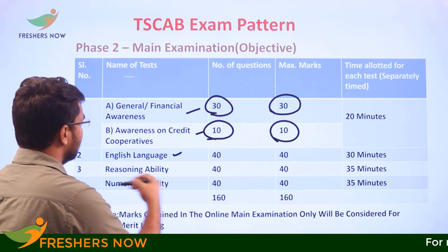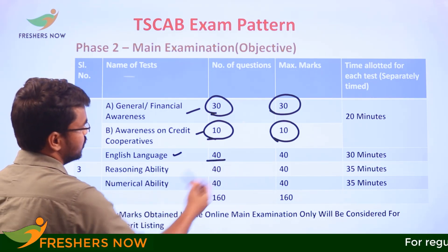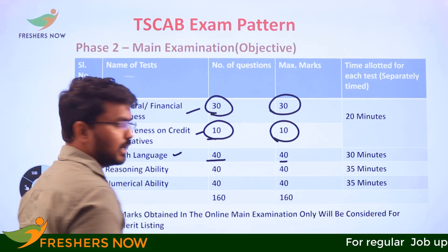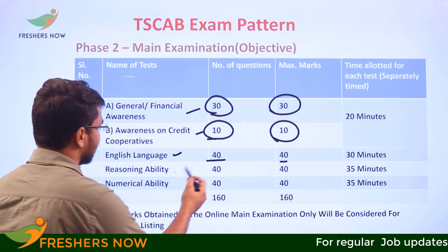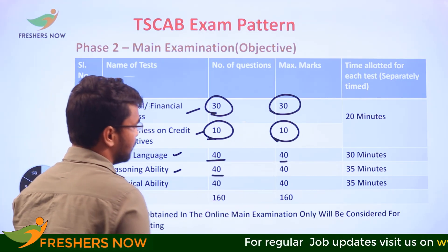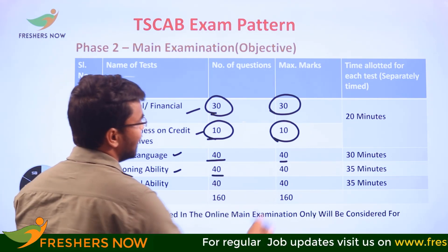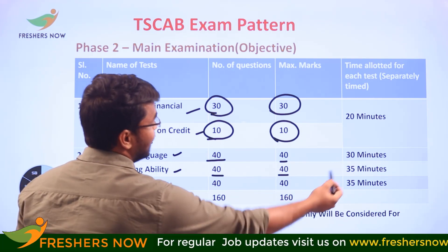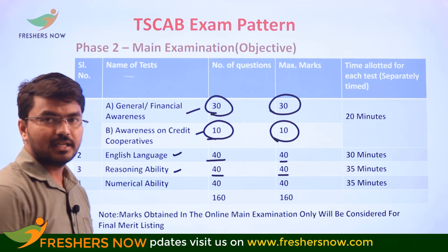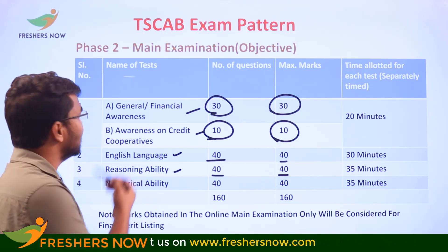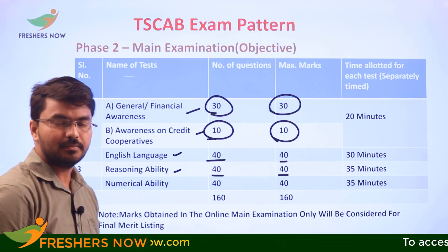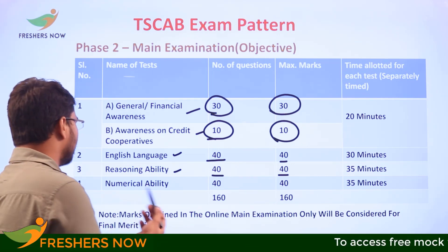In the mains exam, English has 40 questions for 40 marks. Reasoning Ability also has 40 questions for 40 marks, with a section-wise time allowance of 20 minutes for Reasoning and 20 minutes for English.